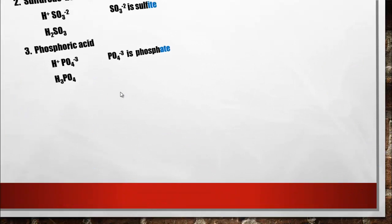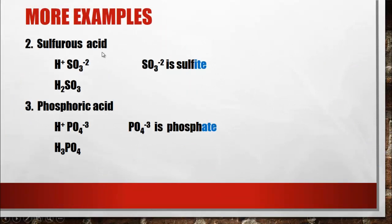Another example is sulfurous acid, which ends with '-ous acid.' The polyatomic ion of sulfur with an '-ite' ending is sulfite, which has the formula SO3-2. We attach that ion to hydrogen. Since the charges are not equal, we use the crisscross process: the subscript of hydrogen is the oxidation number of sulfite (2), and the subscript of SO3 is the oxidation number of hydrogen (1). The final formula for sulfurous acid is H2SO3.